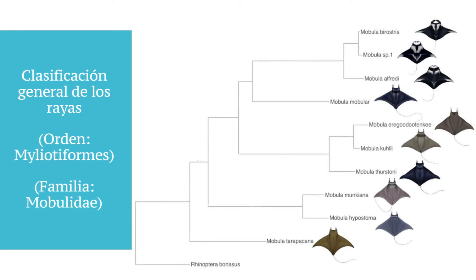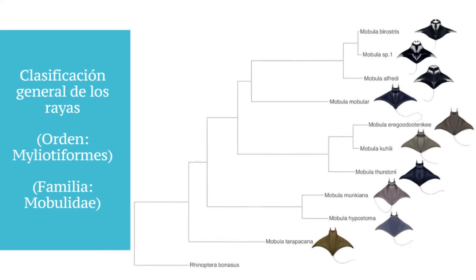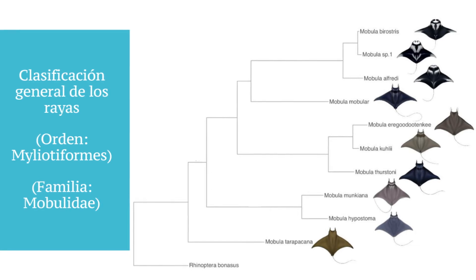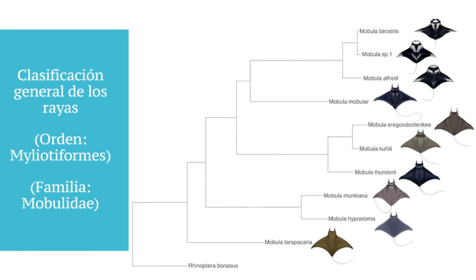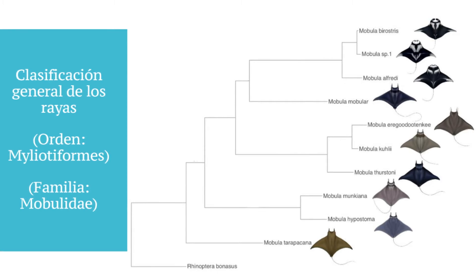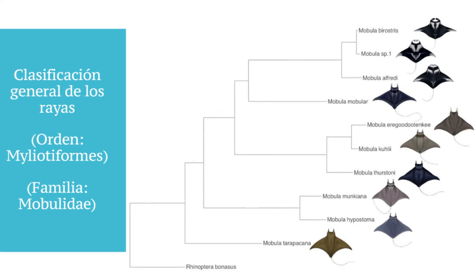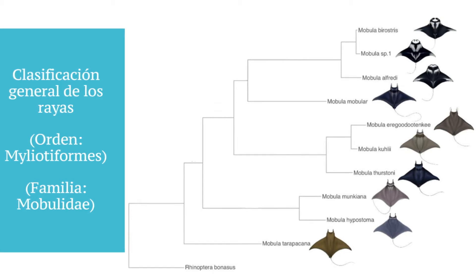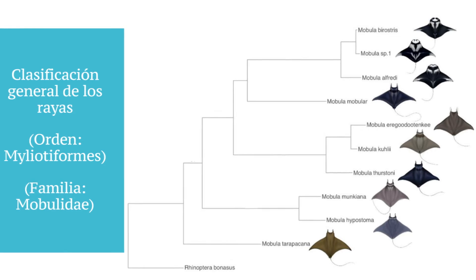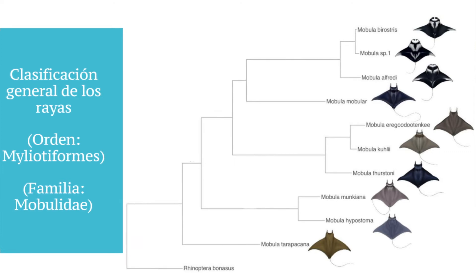Within the Myliobatiformes, under that order, we find the family Mobulidae. Within this family are all the species we'll cover today. There is a discussion, similar to the one we had yesterday about genus: normally two species — known as Manta birostris and Manta alfredi — have had their scientific names changed to match the family genus, Mobula. They are now scientifically known as Mobula birostris and Mobula alfredi.